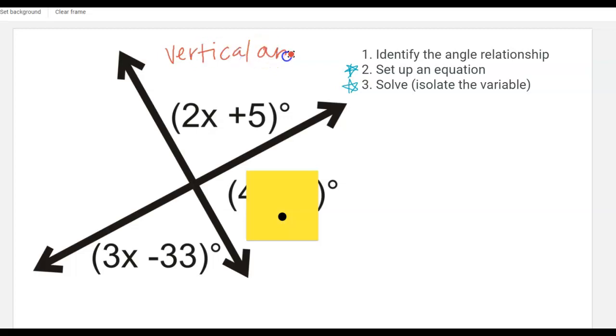Vertical angles are formed where two lines intersect. So I have this line intersecting this line and then the angles are going to be opposite from each other where the two lines intersect. So these are vertical angles and also these two are vertical angles.